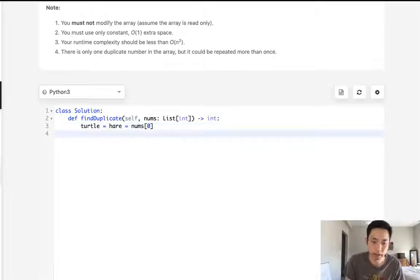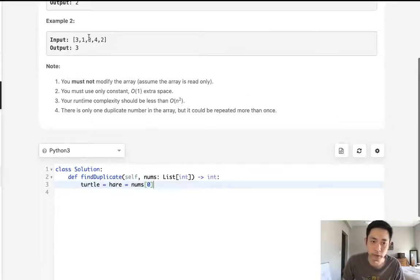Now we're going to have the turtle move ahead once, one position, while the hare moves two positions. And they'll follow the nums, whatever values that are given to us with these numbers here. But we'll use that number to indicate which position in the array we want to go to.